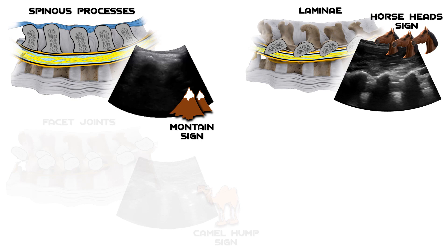Summarizing the signs in the sagittal axis: spinous processes produce the mountain sign, laminae produce the horse head sign, facet joints produce the camel hump sign, and the transverse processes produce the trident sign.